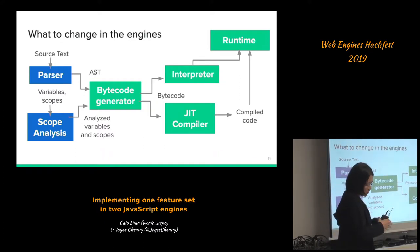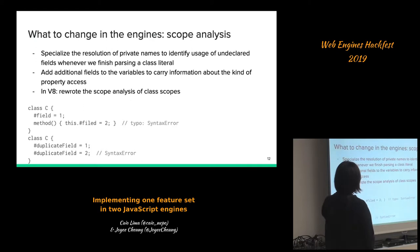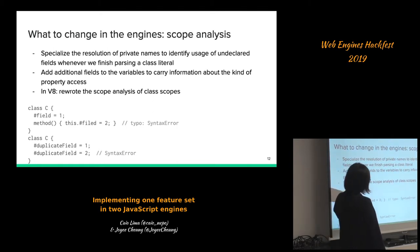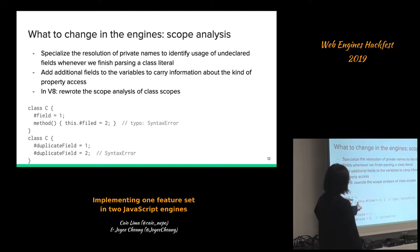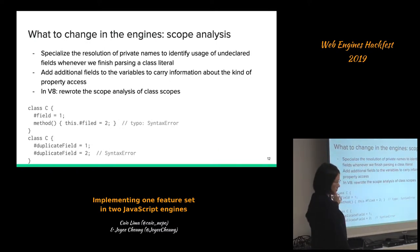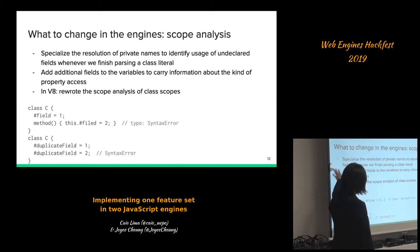Because with private names you can throw errors early, we need to modify the scope analysis quite a bit. For example, we need to specialize the resolution of private names to identify usage of undeclared fields when we finish parsing a class literal. For example, if a class has '#field' but in a method there's a typo like '#filed', that throws a syntax error — whereas using underscore instead of hash would silently fail or silently add things to the instance.